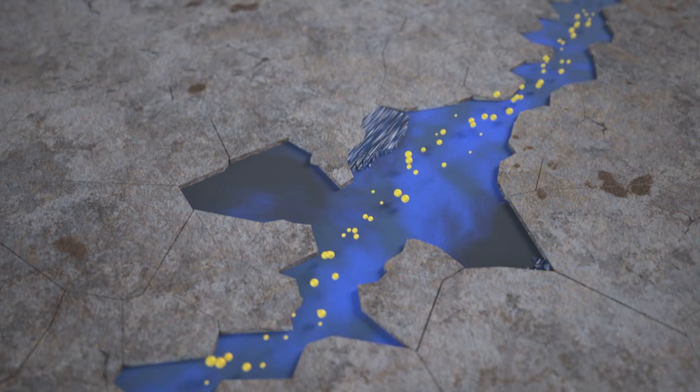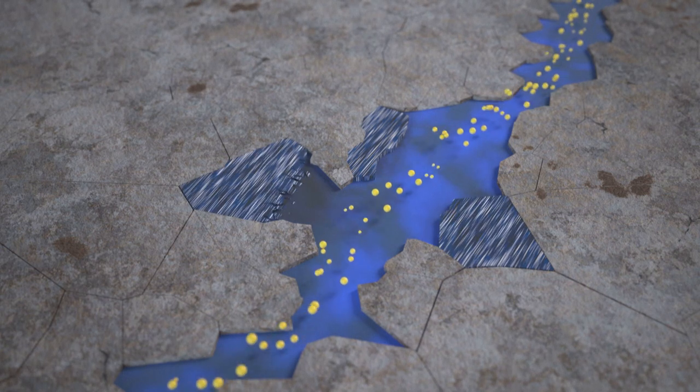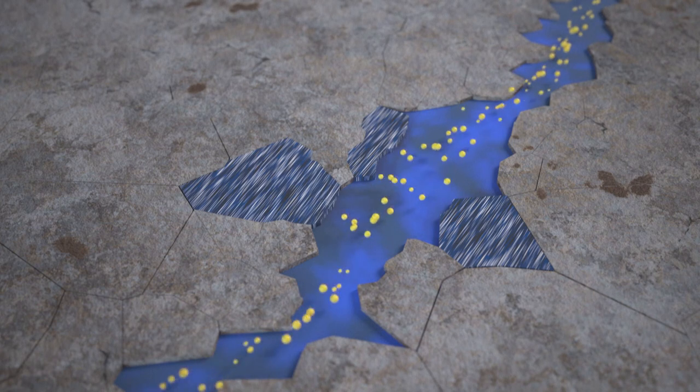Soon, the solution cannot hold any more silicon. The silicon precipitates and new, completely different minerals form, for example clay minerals.